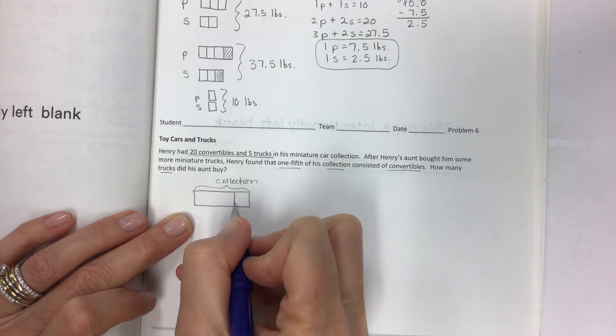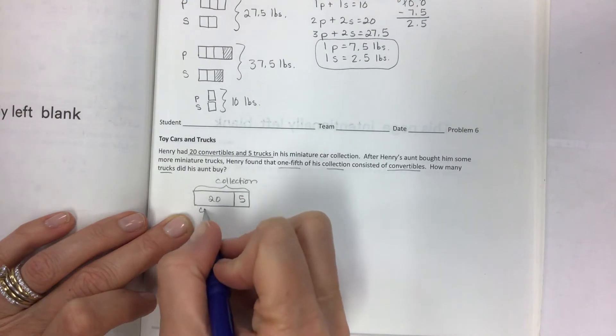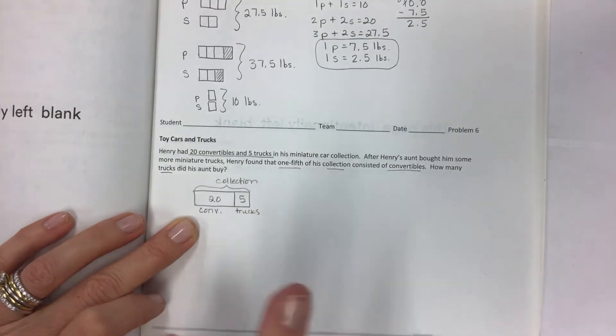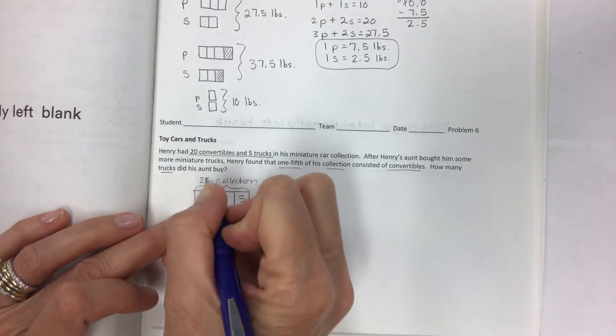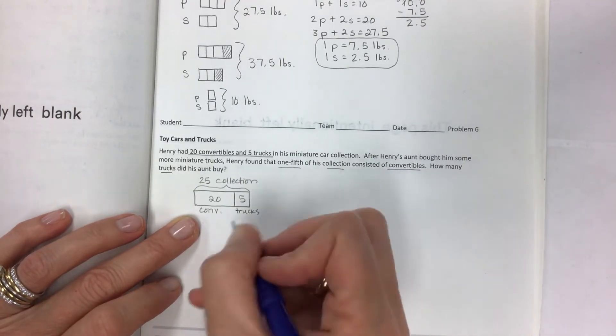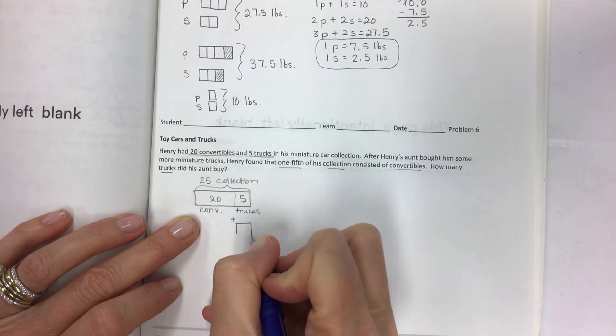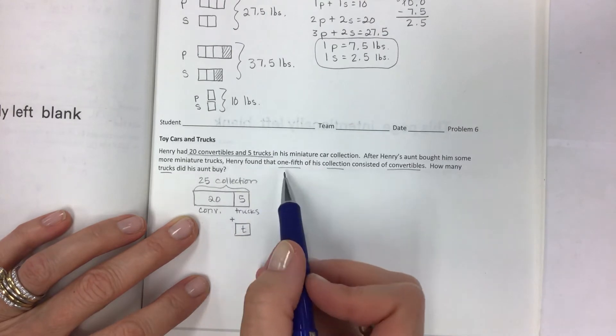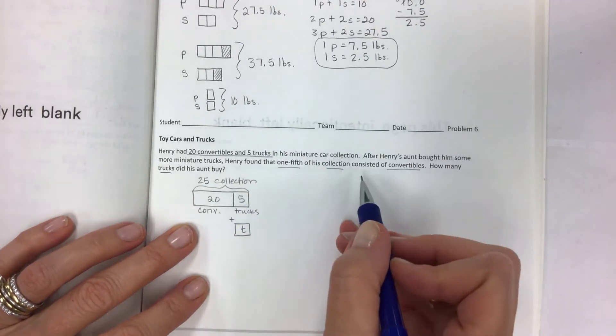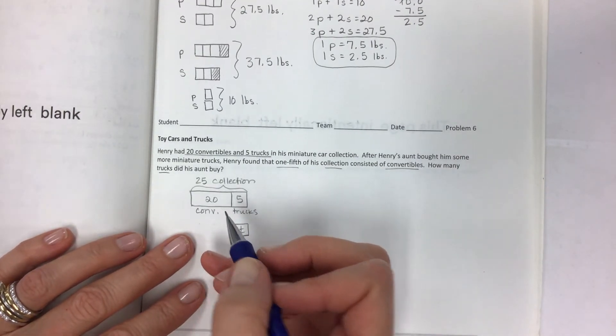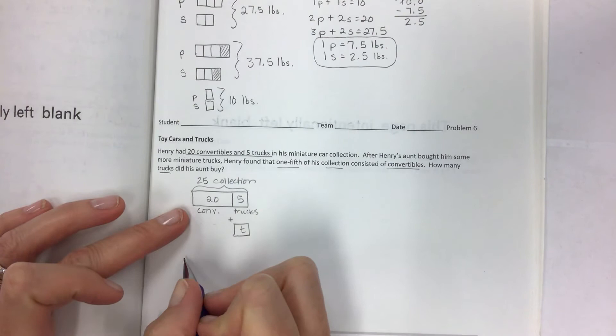Let's make a picture of this again. Twenty convertibles and five trucks in his collection. You can draw a picture of the collection and we can just section it off like so. Twenty and five. We have convertibles and we have trucks just to see what we have. We have 25 in the collection. After Henry's aunt buys him more miniature trucks, we have mystery number two. Henry found that one-fifth of his collection consisted of convertibles.